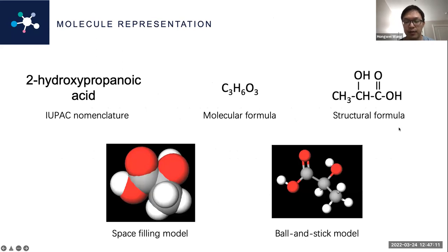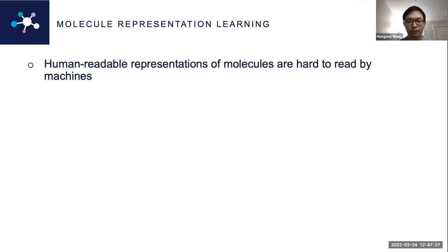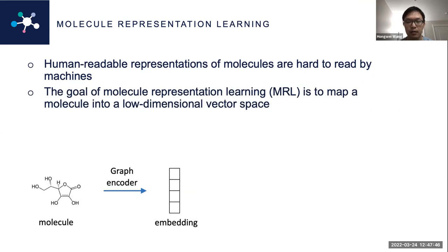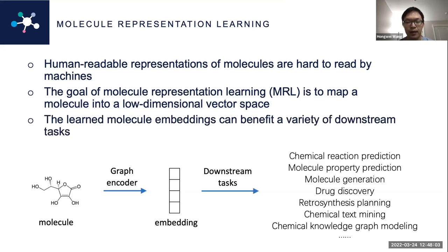How to represent molecules is a fundamental and crucial problem in chemistry. Taking lactic acid as an example, chemists usually use IUPAC nomenclature, the molecular formula, and structural formula to represent molecules in chemistry literature. Space-filling models and ball-and-stick models are also common ways to show their 3D structure. However, such representations are designed for human readers rather than computers. To facilitate machine learning, Molecule Representation Learning (MRL) is proposed to map molecules into a low-dimensional real space and represent them as dense vectors. The learned vectors, also known as embeddings, can benefit downstream tasks such as chemical reaction prediction and molecule property prediction.